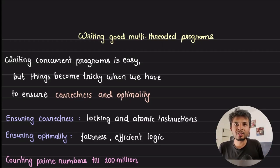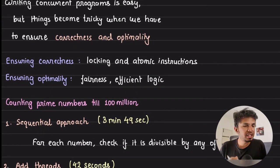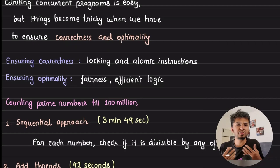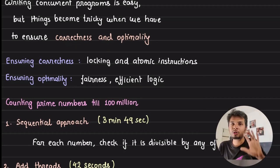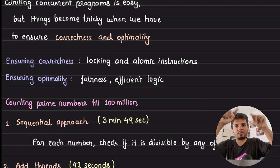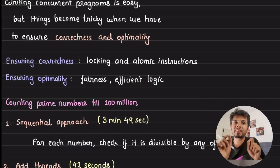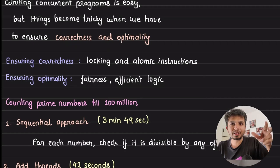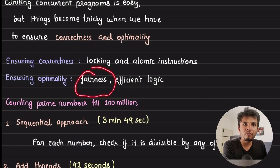To ensure correctness of our code especially when writing multi-threaded programs, we use locking — because it is very possible that you have a globally shared variable across two threads, both trying to update the value and losing correctness. For example, if my count value is 10, both threads might read 10, both update to 11, but the final value should have been 12. That's wrong. That's where you put locking, mutexes, semaphores, or atomic instructions to ensure correctness.